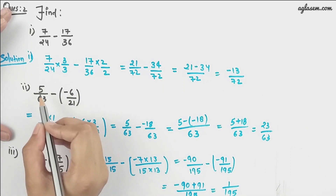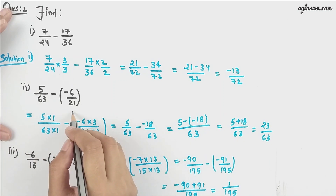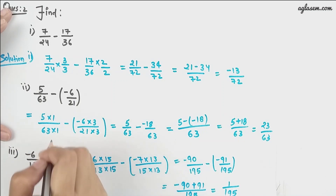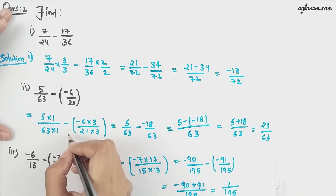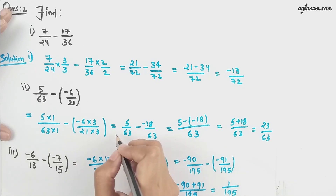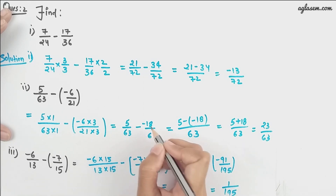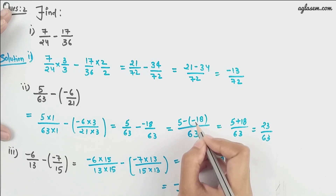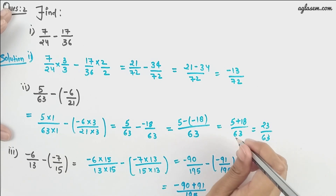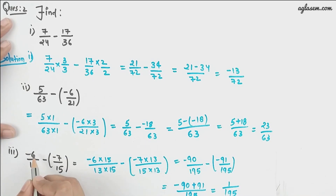Moving further, we have 5/63 minus (-6/21). We make the denominators the same by multiplying 5/63 by 1 and 6/21 by 3, giving 5/63 minus (-18/63). Both signs convert to plus, so we have 23/63 as our answer.